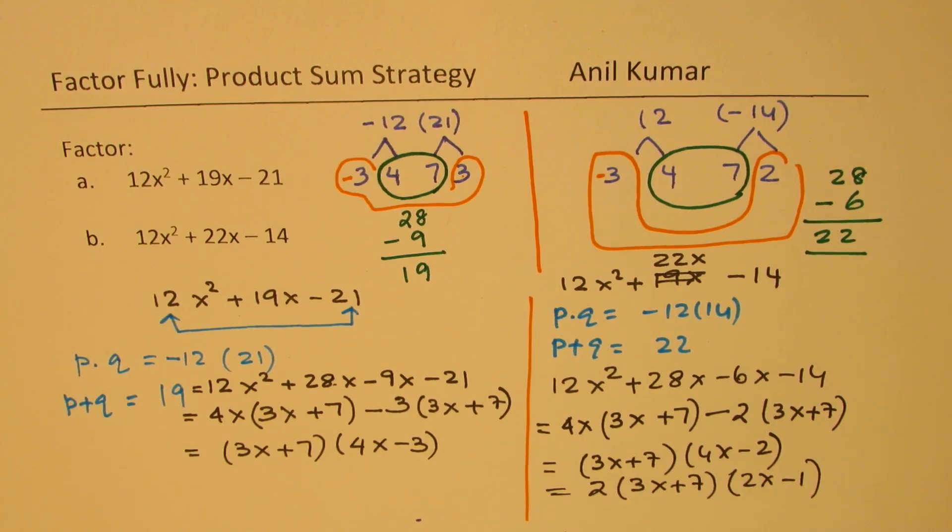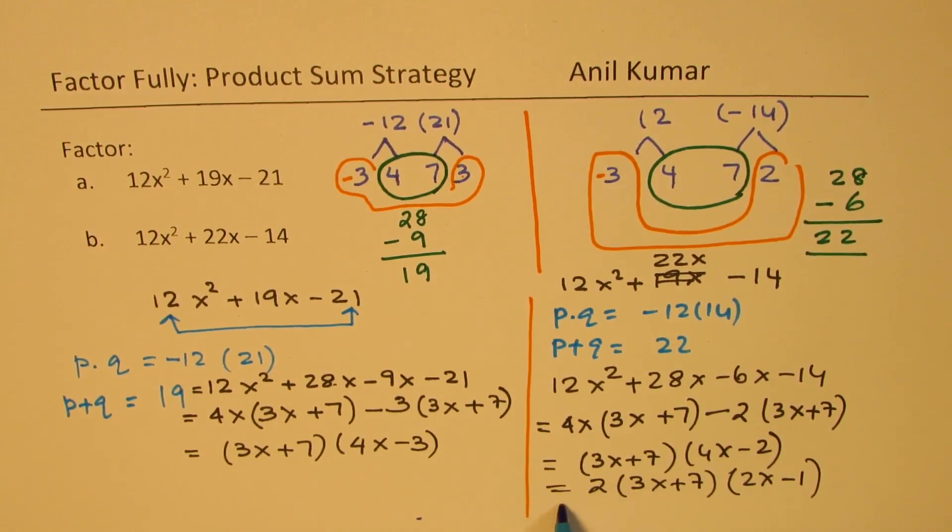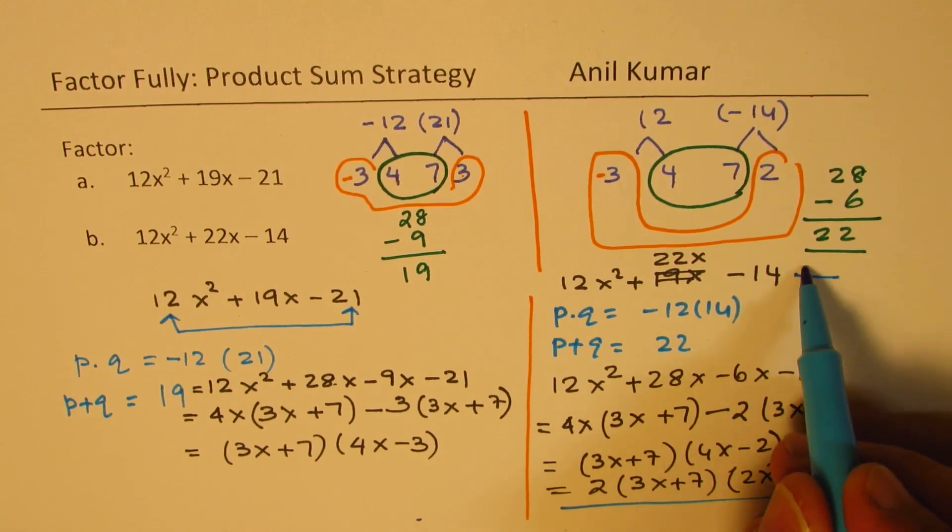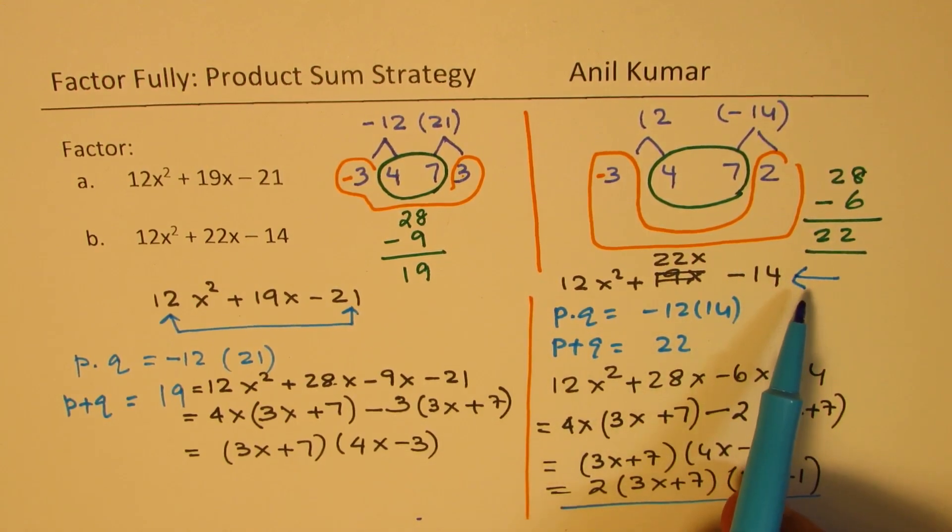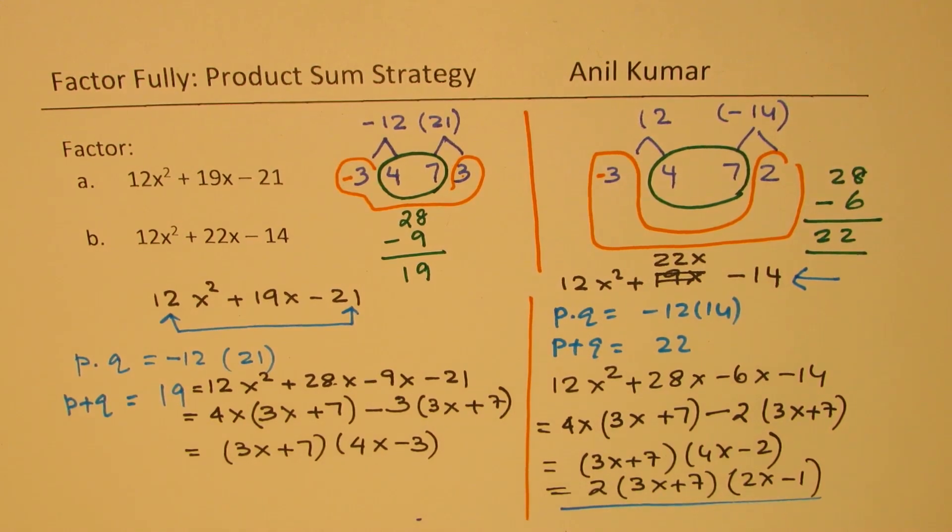Now, you must have noticed that 2 actually was a common factor also. So to begin with, we could have taken 2 as a common factor and then come to this result. I hope that makes sense.